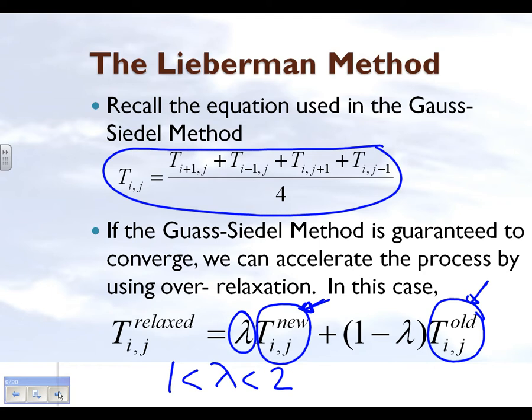If we choose a lambda less than 1, that's also considered in some cases where you may find that the process might be a little bit divergent. In order to make that particular process convergent, you under-relax by choosing a lambda which is a number less than 1.